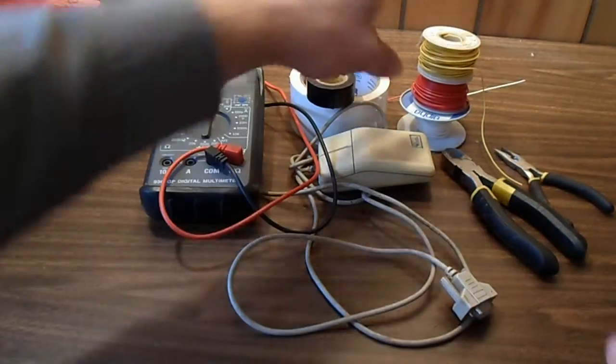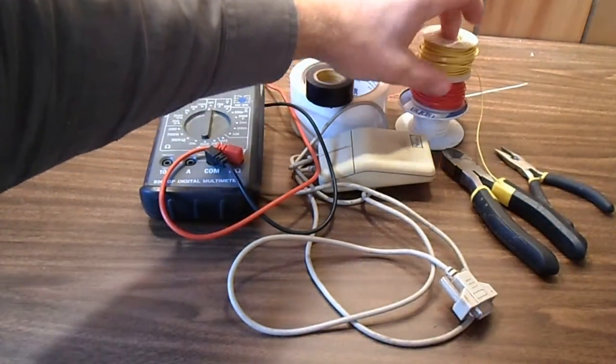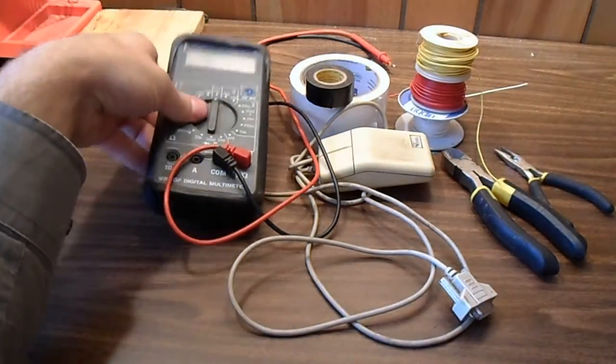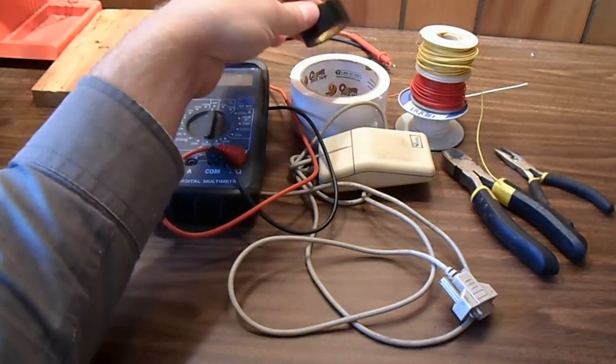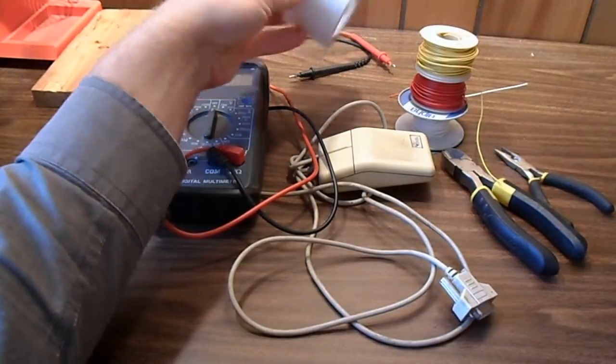I'm also going to need three colors of number 20 or 22 hookup wire, a multimeter, electrical tape, and duct tape. I'm using this for labeling, so that's why I chose white.